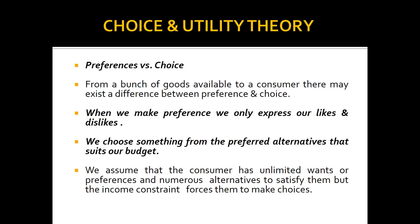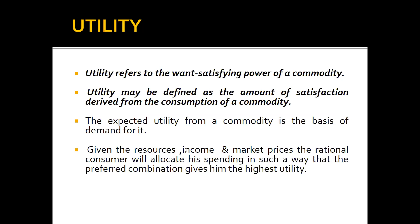Consumer behavior assumes that every individual tries to maximize his satisfaction by consuming products and services with the limited income available to him at a particular time — meaning the customer will spend every penny where they get maximum satisfaction. From a bunch of goods available to a consumer, there may exist a difference between preference and choice. When we make a preference, we only express our likes or dislikes. We choose something from preferred alternatives that suits our budget. We assume the consumer has unlimited wants or preferences and numerous alternatives to satisfy them, but the income constraint forces them to make a choice.